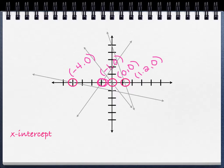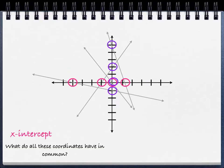Now let's look at the places where these lines cross the y-axis — that would be all of these. Those purple circles, that's where the lines cross the y-axis. And so if I were to find the coordinates of those points, this one up here would be 1, 2, 3, 4, 5 — so this would be 0, 5.